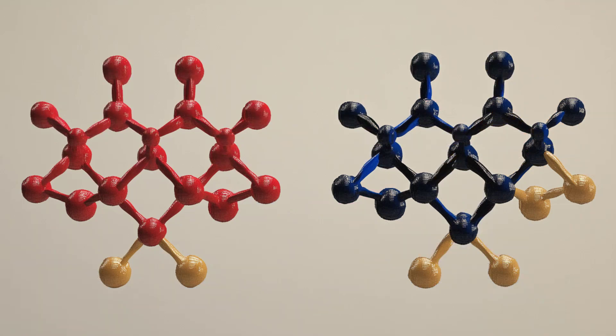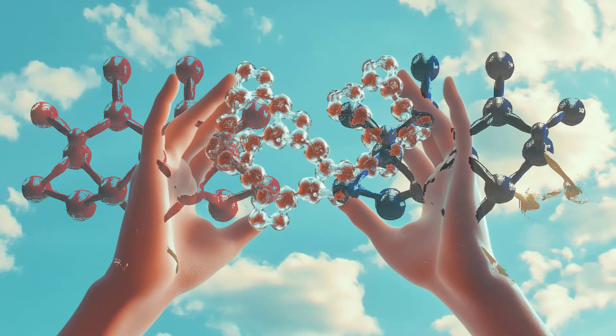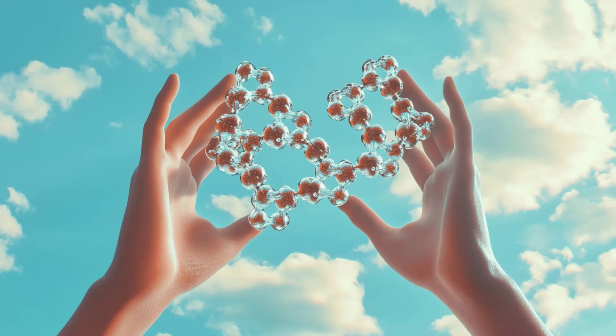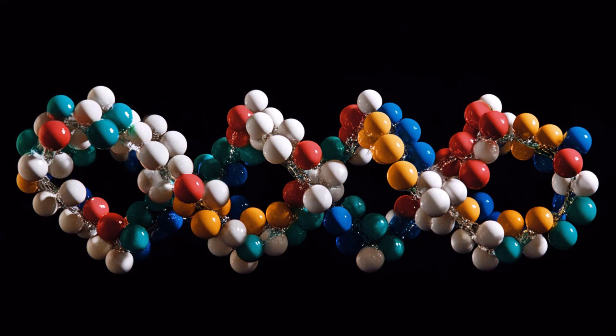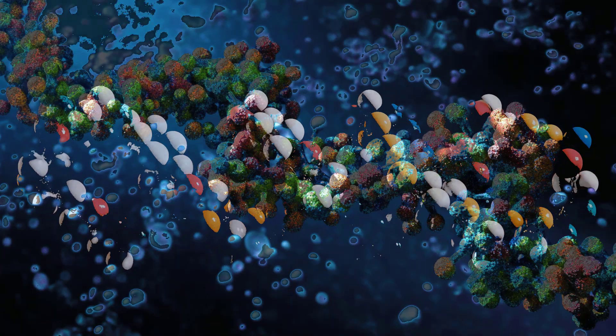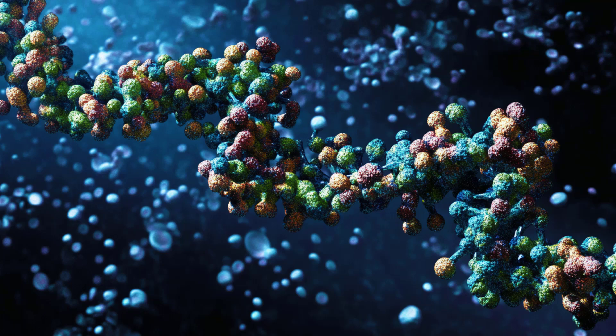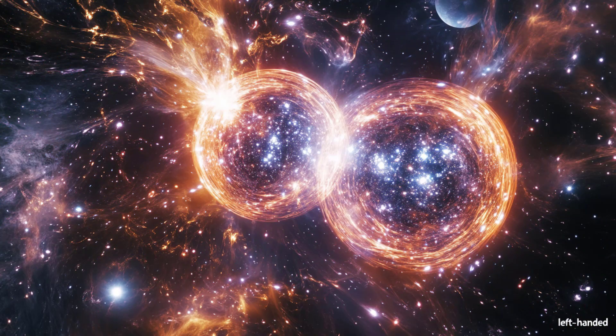Proteins use only left-handed L-amino acids, and DNA and RNA are built with right-handed D-sugars. This selectivity, known as homochirality, is essential for the proper functioning of biological processes. For instance, enzymes—molecular machines that drive biochemical reactions—are like locks that only fit keys, molecules of the correct handedness.